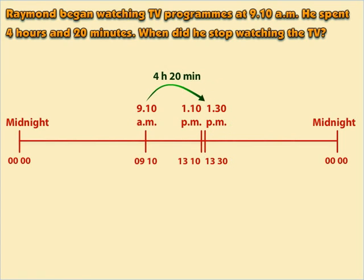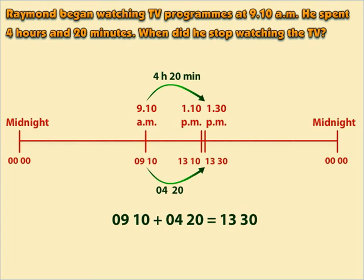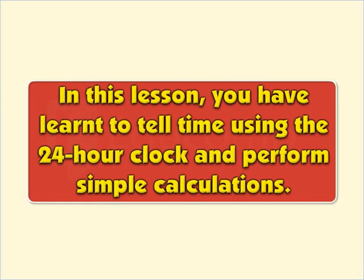That's all there is to it. Alternatively, we can add 0420 to 0910, which gives us 1330, referred to as 1:30 p.m. on the 12-hour clock. In this lesson, you have learned to tell time using the 24-hour clock and perform simple calculations.